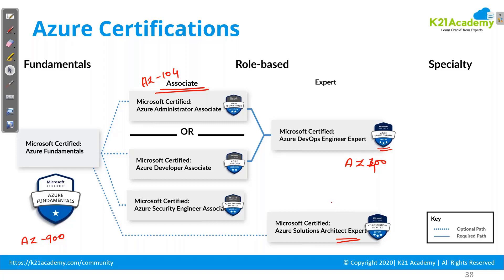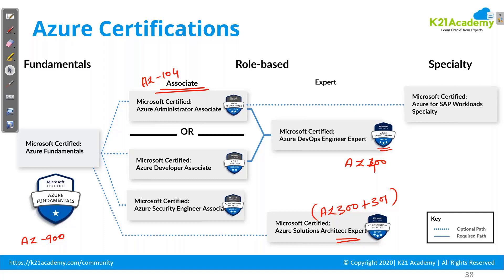If you are from an on-premise infrastructure background, you are definitely a hotcake. There are many companies who are highly biased between two types of resumes: Type A, a person who is very good in Azure Cloud, and Type B, a person who is good in both on-premises and Azure Cloud. The three-star is a combination of two certifications, AZ-300 and AZ-301. There are also certifications for specialized workloads such as SAP on Azure, Azure Stack, and Hypervisor.